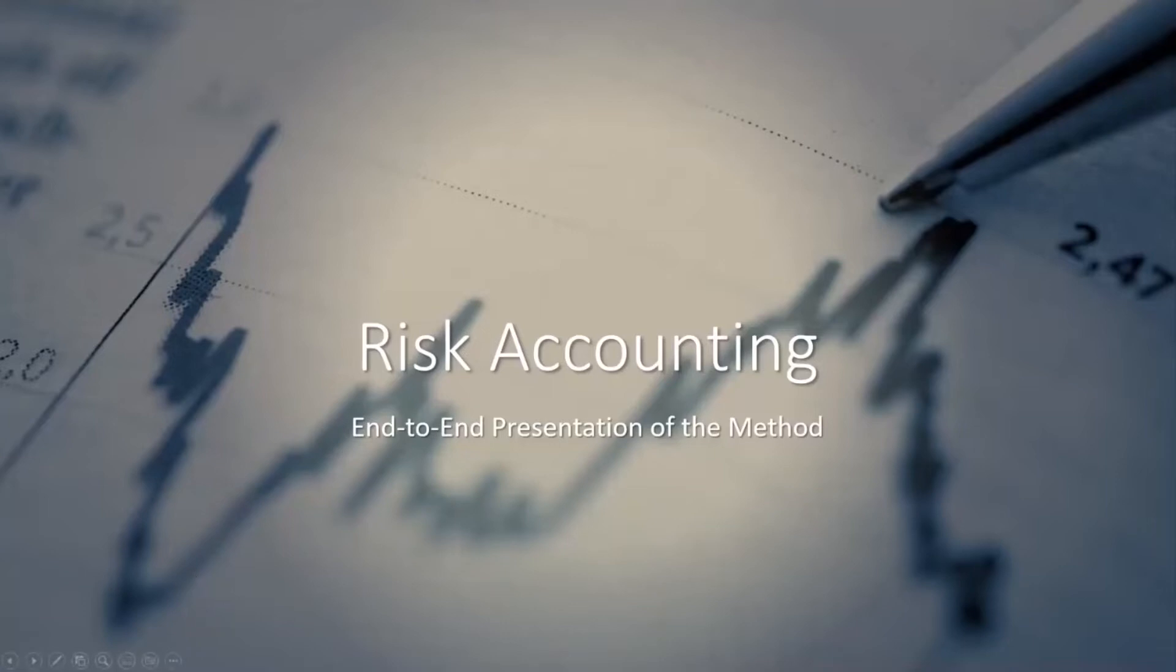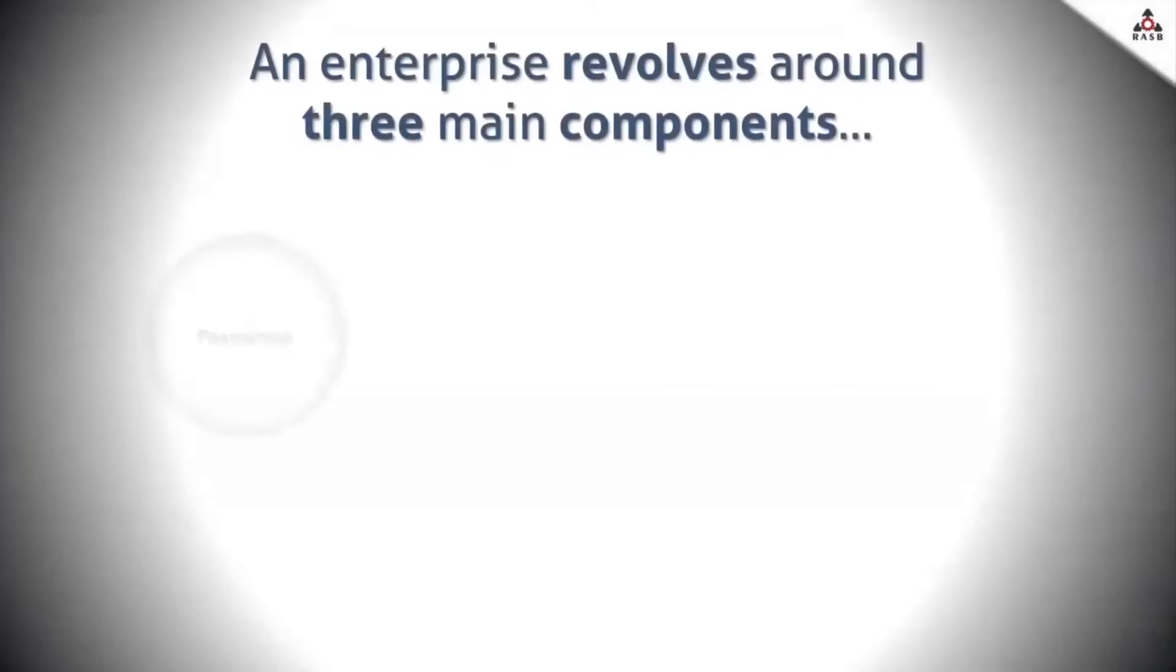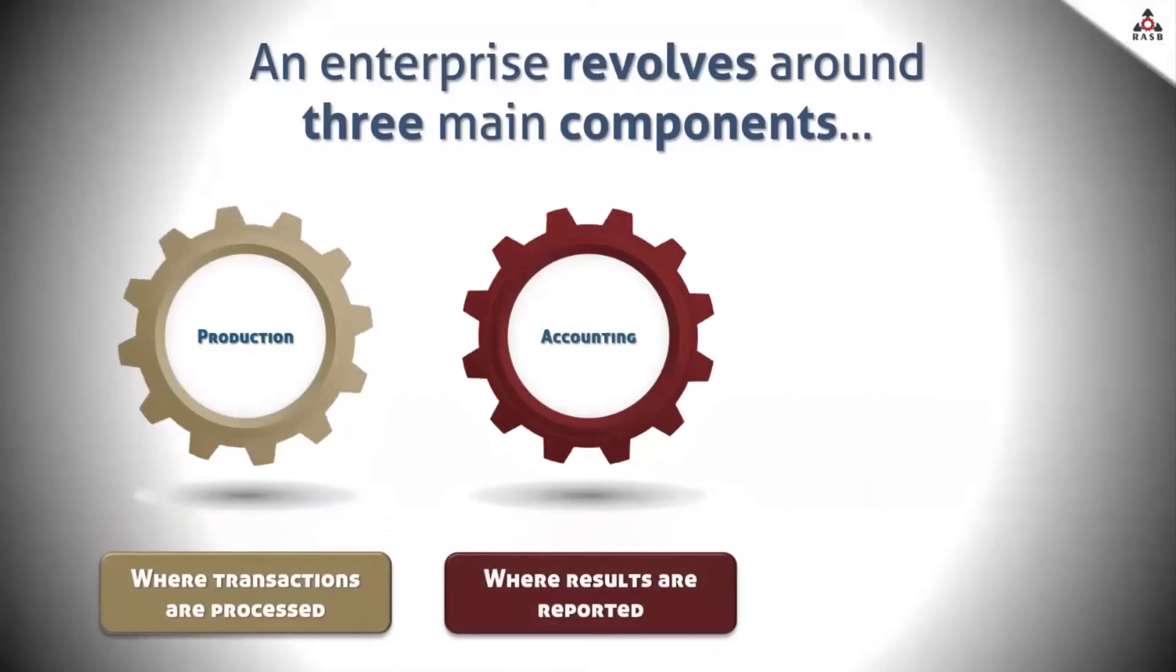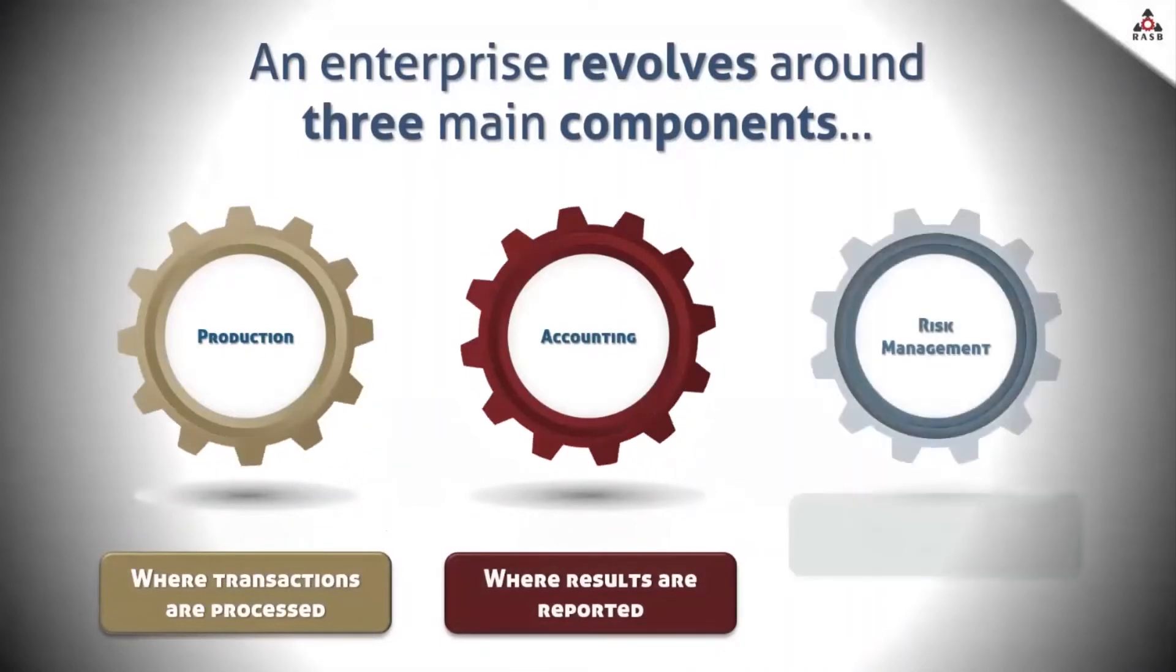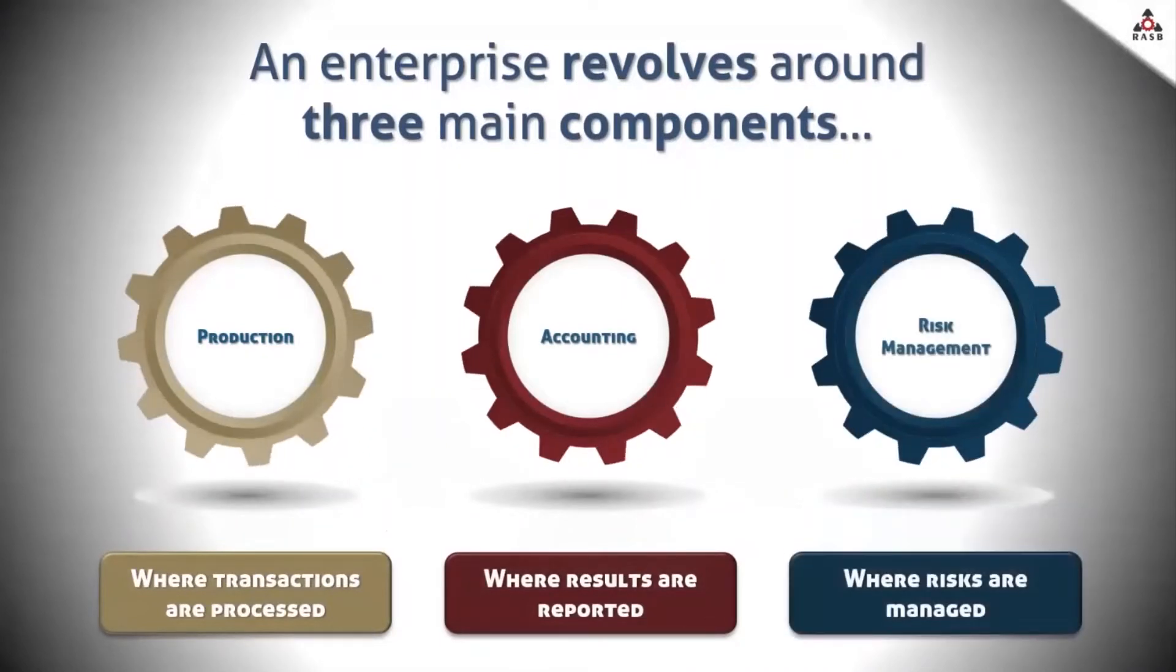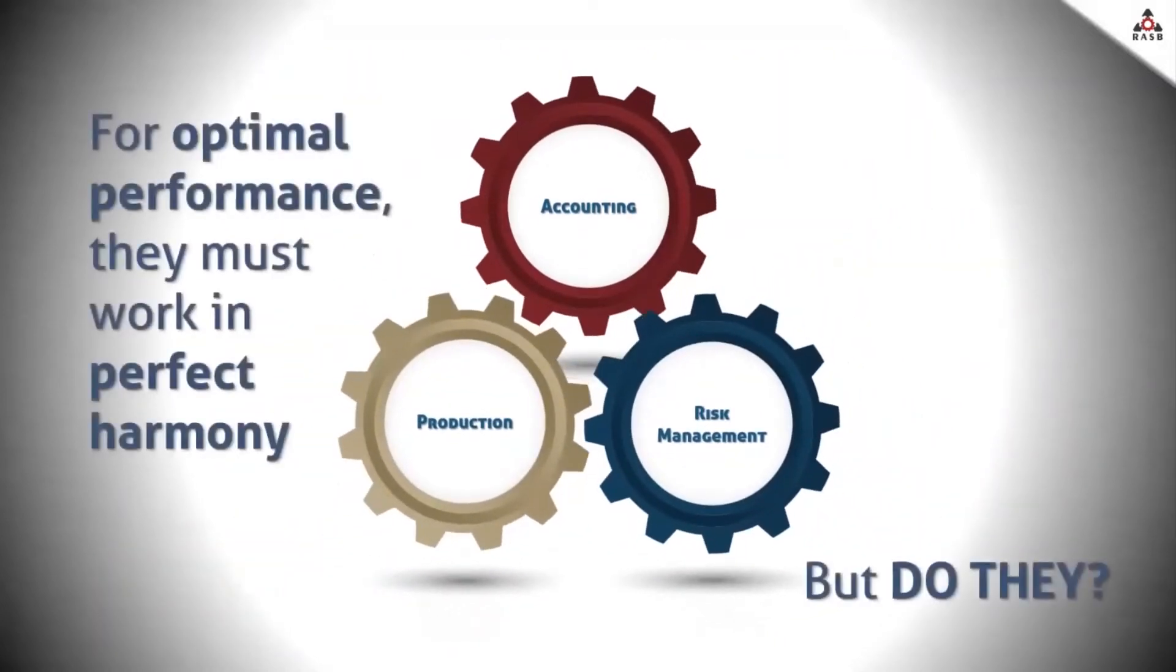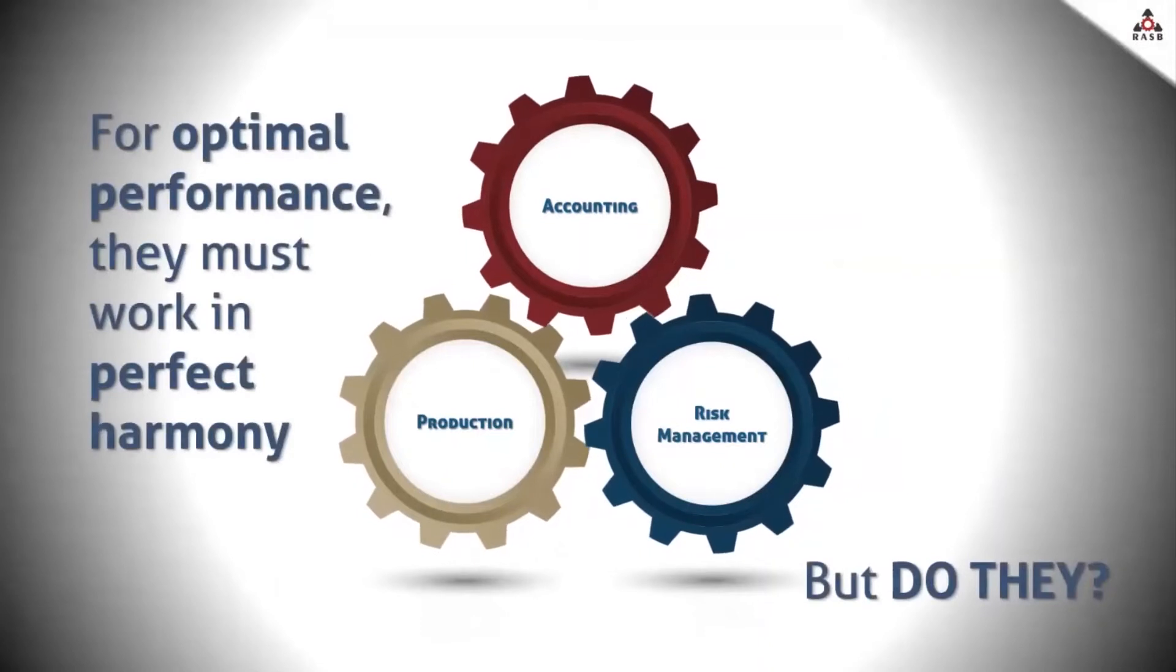We'll start with the way we see in a simplified way how a business works, having three main components that should be working together as flawlessly as possible: production or operations where the business happens, accounting, and risk. But are they working together as they should?